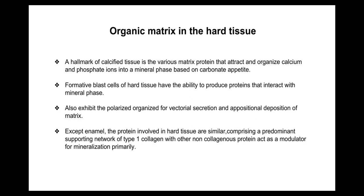Formative blast cells of hard tissues have the ability to produce proteins that interact with the mineral phase. They also exhibit polarized, organized vectorial secretion and a positional deposition of matrix.